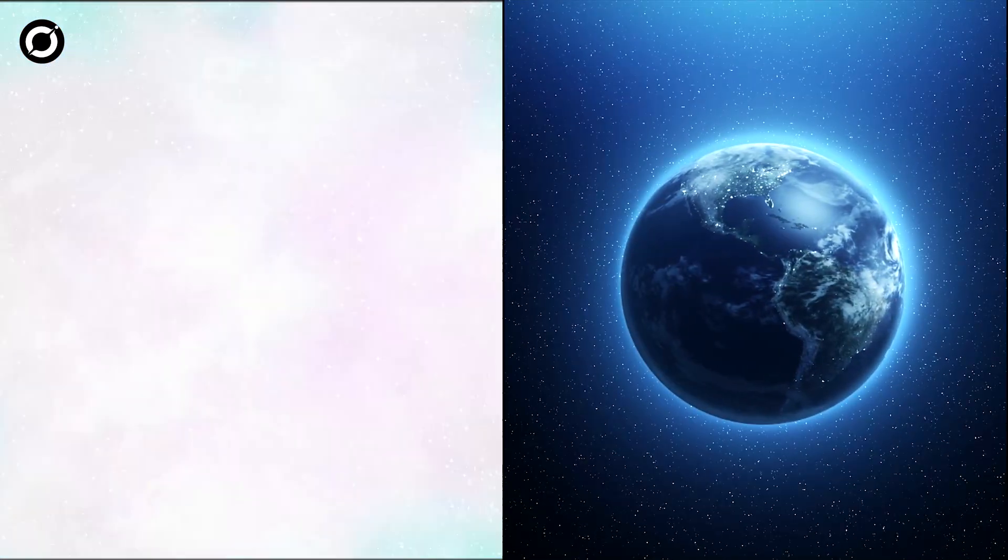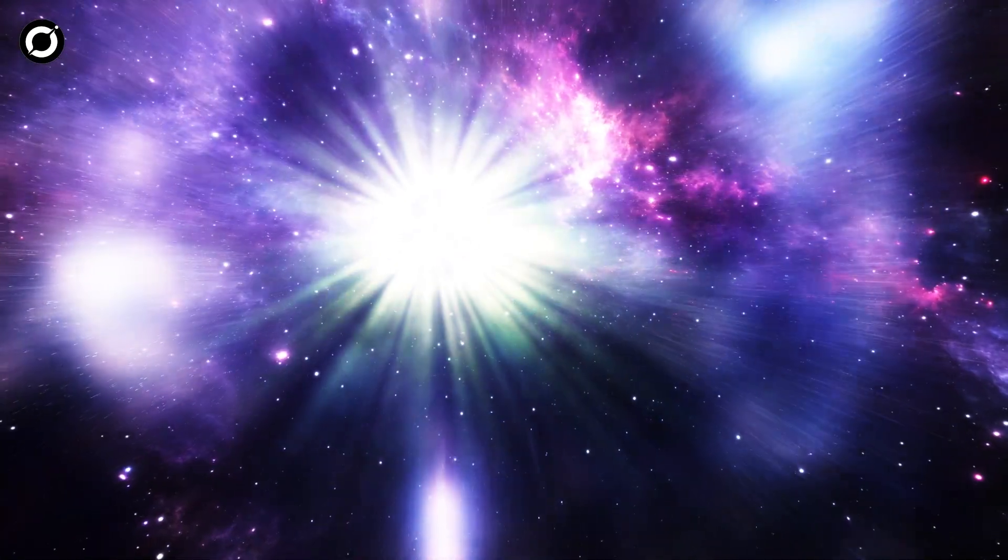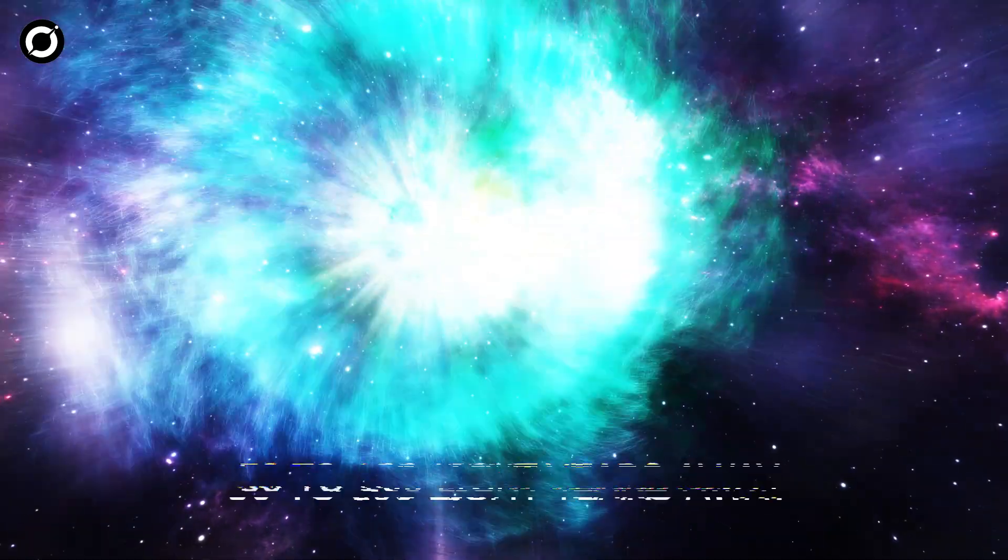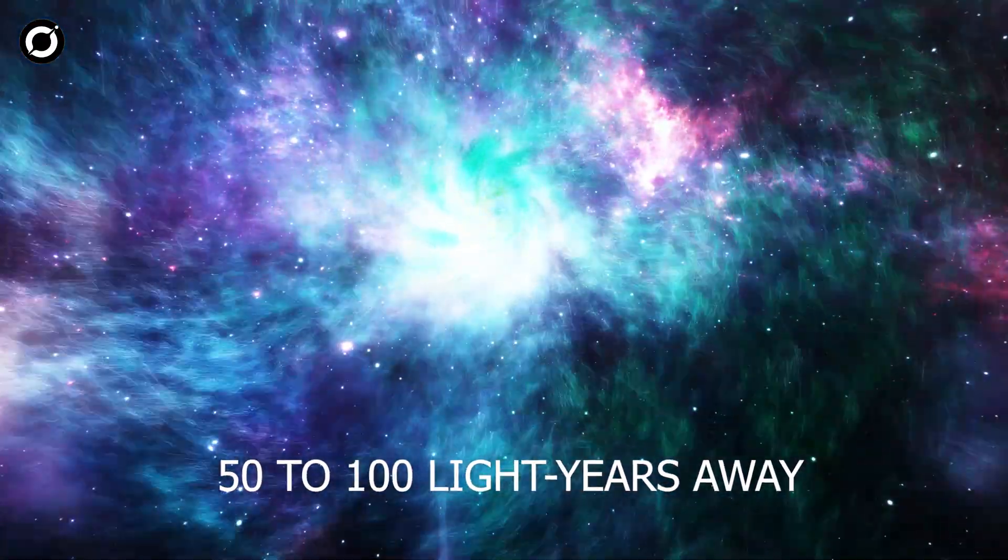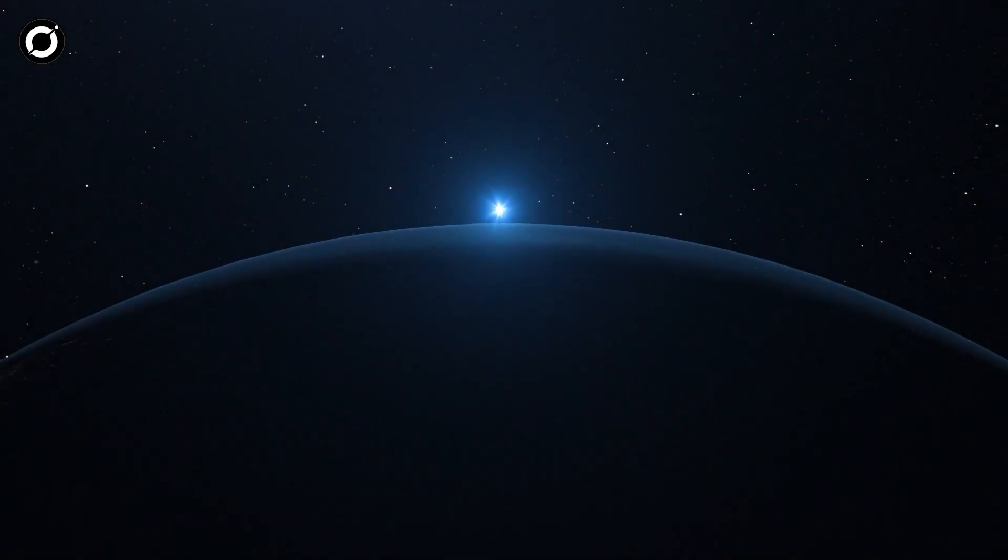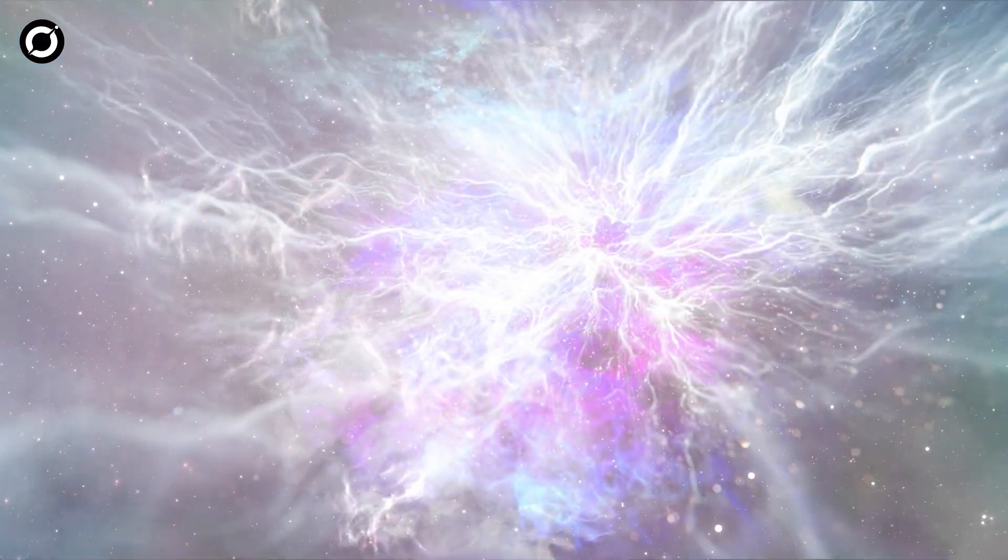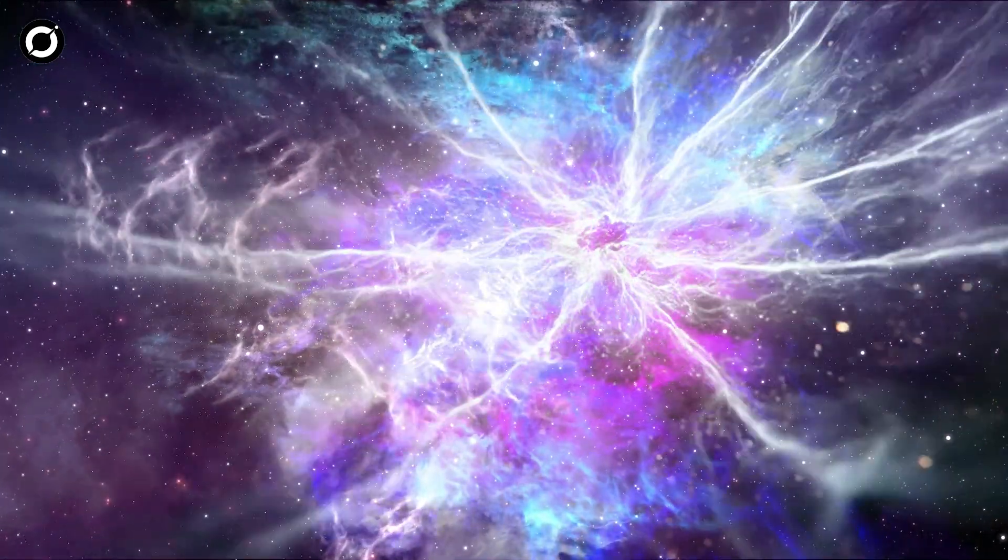First off, how close would a supernova have to be to seriously affect Earth? Well, the threshold for potential harm is generally considered to be around 50 to 100 light-years away. If a supernova went off within this range, it would release an enormous amount of radiation, particularly in the form of high-energy gamma rays.